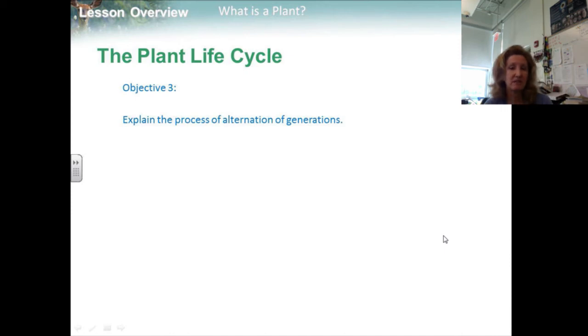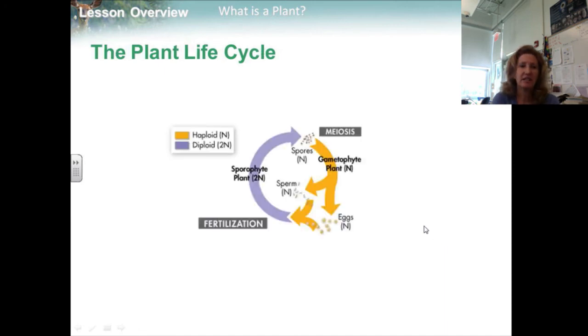So, objective three, and this is what you really need to know for this lesson, is explain the process of alternations of generations. All right. The life cycle of land plants has two alternating phases: a diploid, or 2N phase, as you can see here in the purple, and a haploid phase, which is the gold color. The shift between the haploid phase and the diploid phase is known as alternations of generations, as you can see in this figure right here.